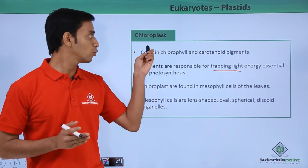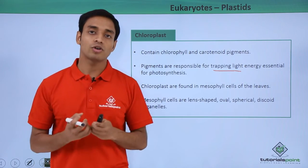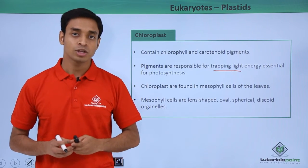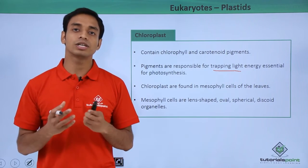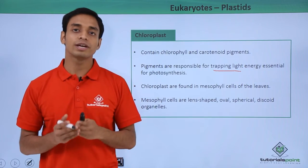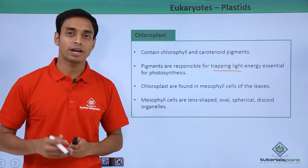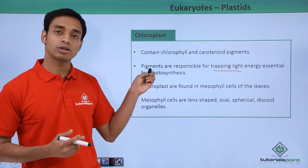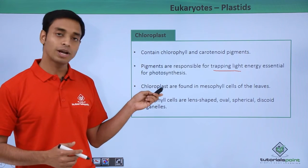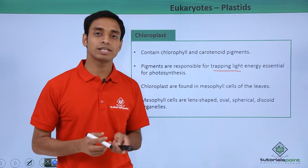Chloroplasts absorb or trap light energy coming from the sun, and this light energy is in turn used in the process of photosynthesis to make food energy molecules for the plant cells. These are very important for the process of photosynthesis.